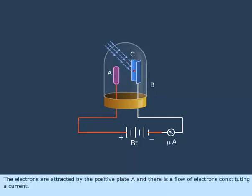The electrons are attracted by the positive plate A, and there is a flow of electrons constituting a current.